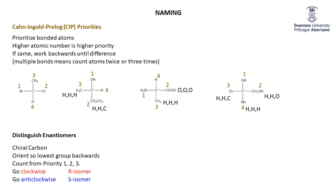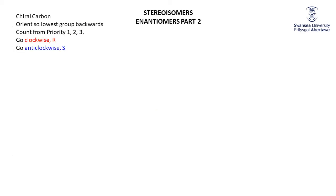To summarize: find the chiral carbon, orient it in your view so that the lowest priority group is at the back, then count the priorities one, two, three in that order. If you had to go clockwise to do that, it's R; if anticlockwise, it's S. Let's do a couple of examples.